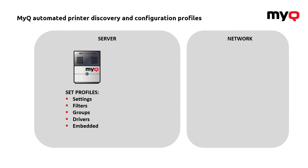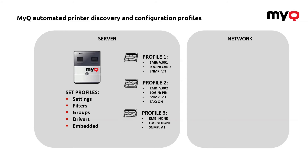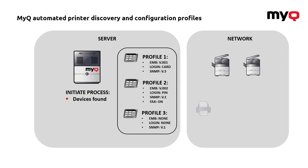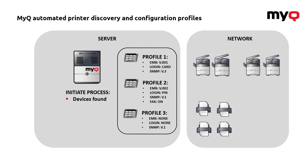You will just install the client on the server, and then based on the profile you define, the system will automatically populate it to all the machines within your fleet. As you can see, I've got here three profiles prepared — two of them are using different embedded types and the last one is about single function devices, which will not have any application but should be monitored using SNMP version 1. So how will this be applied when it comes to deployment? We've created those profiles and started the printer discovery. The printer discovery process pretty much analyzes your network, identifies the machines, and gets them into the system.